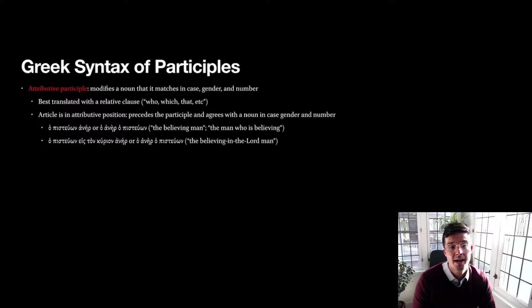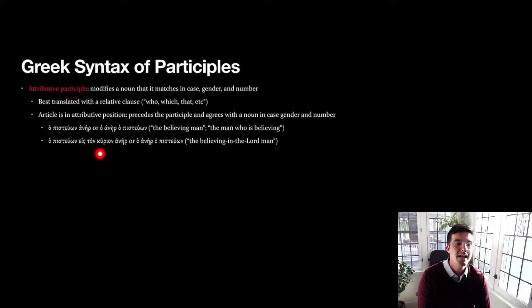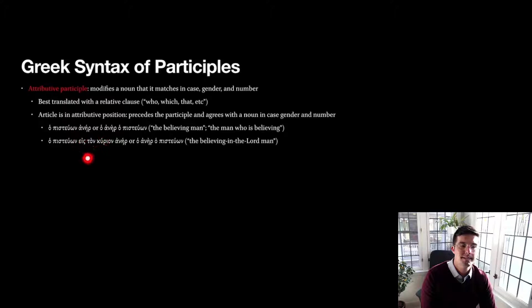An attributive participle is going to modify a noun that it matches in case, gender, and number. We're usually going to translate it with a relative clause. It's going to have the article before it and then the noun with it as well. We have two examples here: 'the believing man' or 'the man, the one who is believing' — basically meaning the same thing with a slight shade of nuance. And as a reminder, the participle can take things after it as well before it goes with its noun. So 'the believing in the Lord man': 'anēr' matches 'pisteuōn,' both nominative masculine singular, but this prepositional phrase has been stuck in to modify the participle.